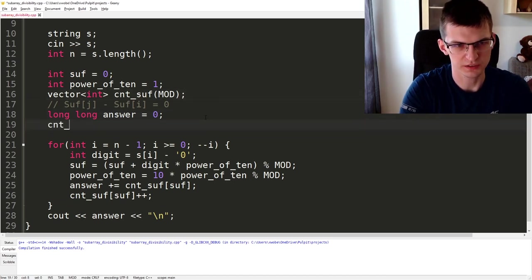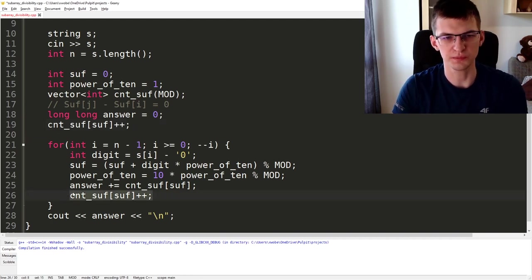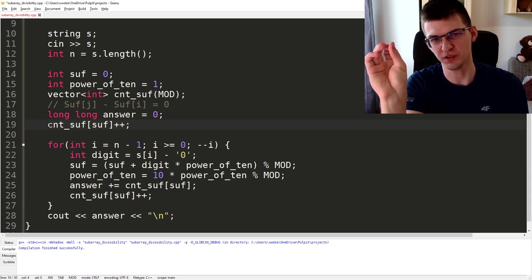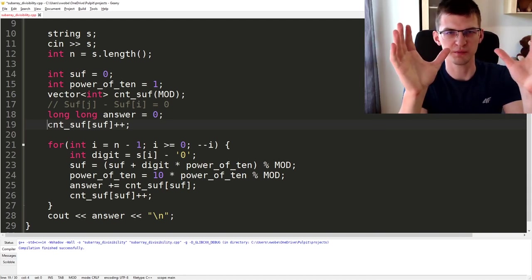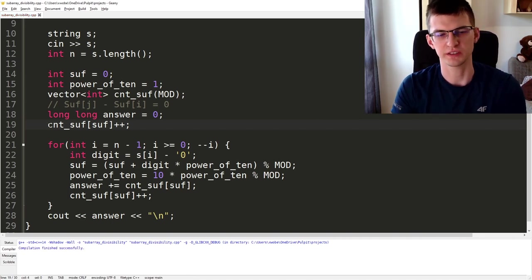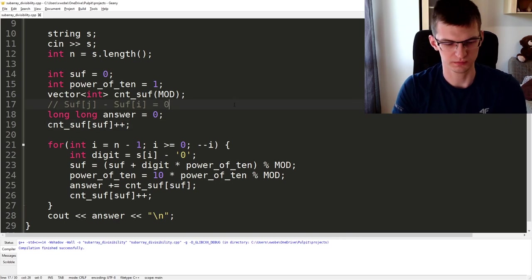I forgot to do this: count_suf[0]++. Just like I do it for every non-empty suffix, I also need to say empty suffix is also possible. If we subtract something longer minus this empty thing, it represents a valid subarray. Let's run this again, this time I got 3, cool. I'm ready to submit.